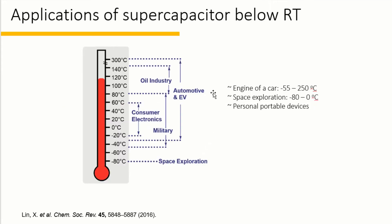Here is a chart showing the operation temperature window for some applications. For example, near the engine of a car, a supercapacitor must endure a temperature range from negative 55 to 250 degrees C. Space exploration needs power supply for nighttime and peak operations, requiring very low temperatures down to negative 80 degrees C. Also, for portable personal devices, consumers would like the device to be more durable to extreme weather temperatures below zero to negative 20 degrees C.